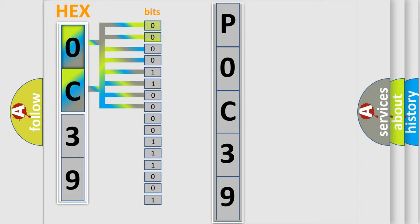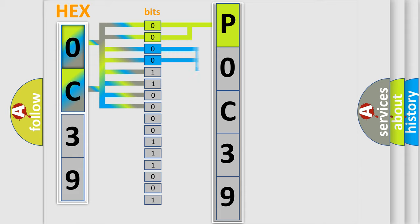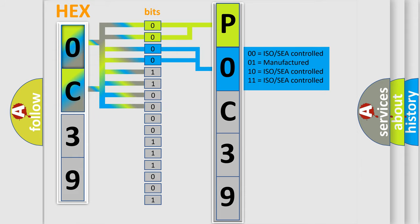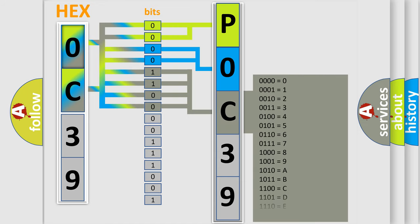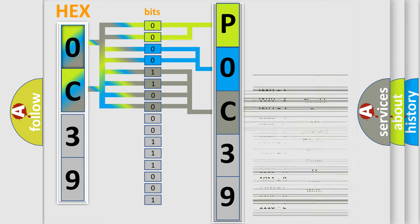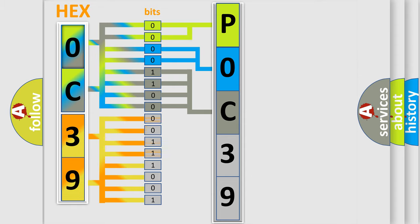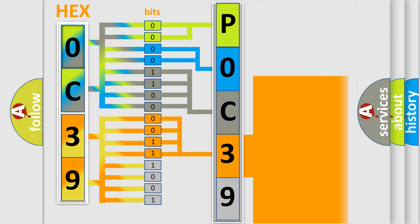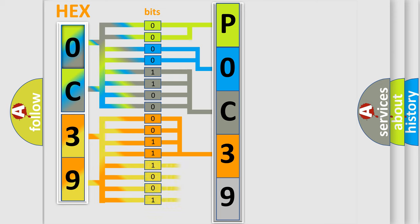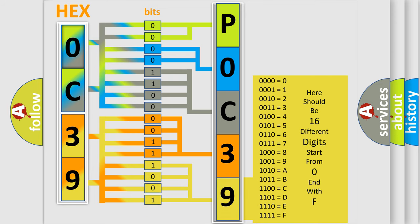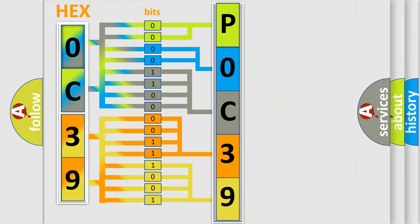Zero means low level; one means high level. By combining the first two bits, the basic character of the error code is expressed. The next two bits determine the second character. The last four bits of the first byte define the third character of the code. The second byte is composed of a combination of eight bits: the first four bits determine the fourth character, and the last four bits define the fifth character. A single byte conceals 256 possible combinations. We now know how the diagnostic tool translates the received information into a more comprehensible format.